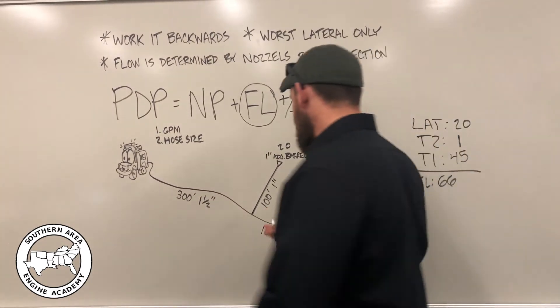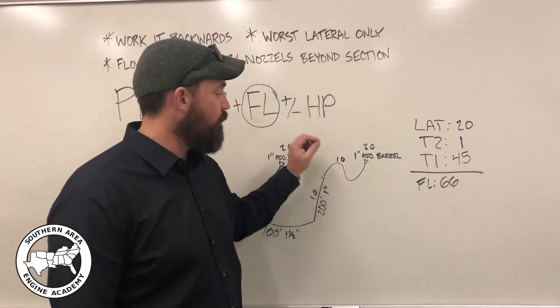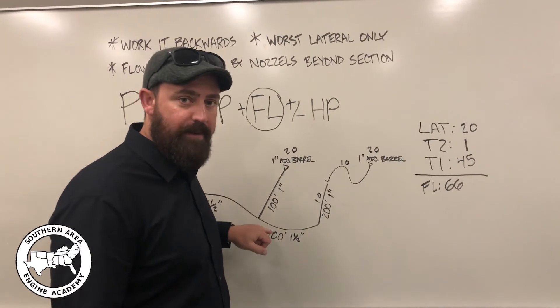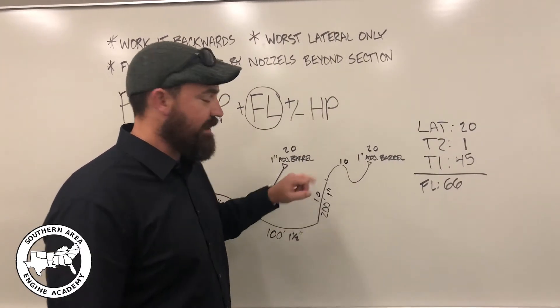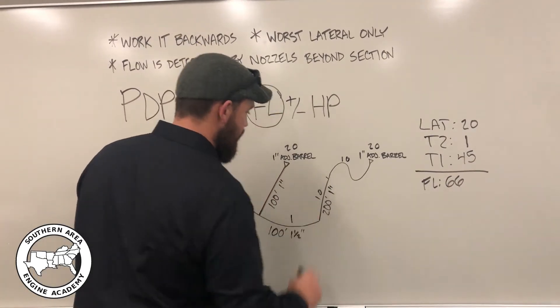Working back to trunk two, trunk two also only has to supply the one nozzle at 20 GPM. So looking in the IRPG, we see that one-and-a-half-inch hose at 20 GPM is only losing one PSI per section of friction loss.